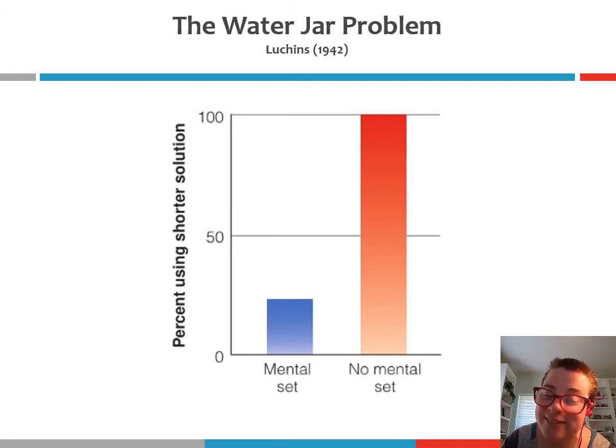In that condition, he first did problem one of the eight that you guys just solved—he did problem one for the participants as a demonstration. This was considered the mental set group because it already established the B minus A minus 2C rule, so it already gave participants prior experience using that rule.